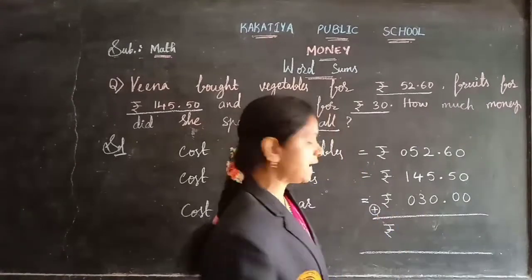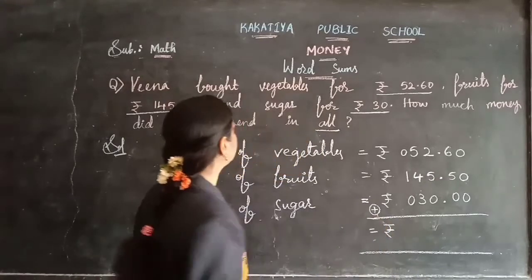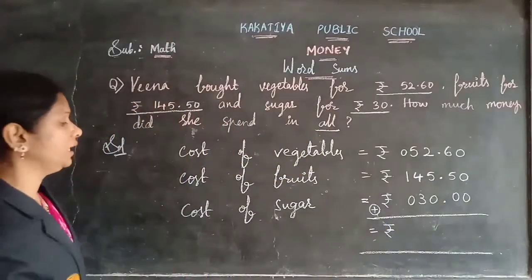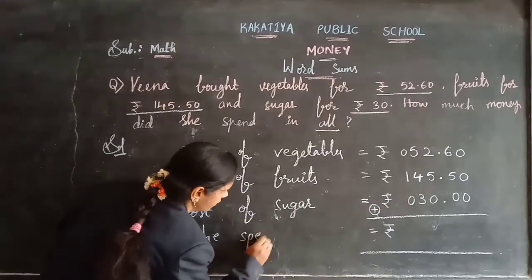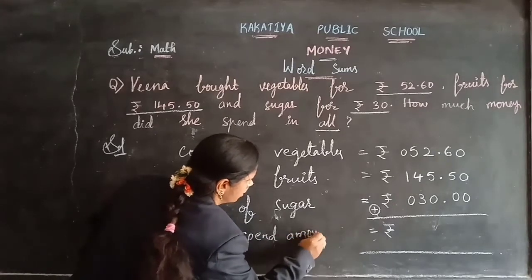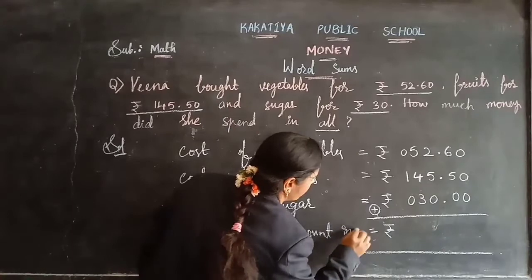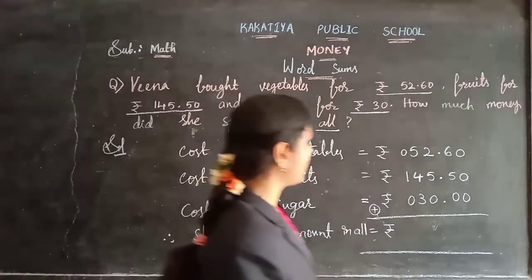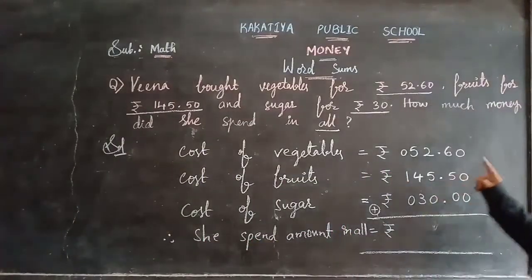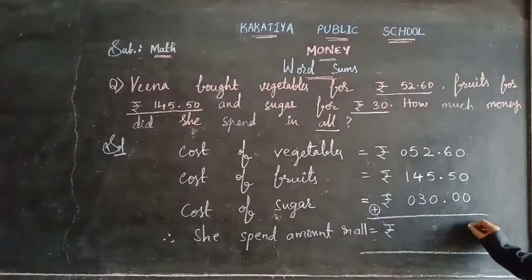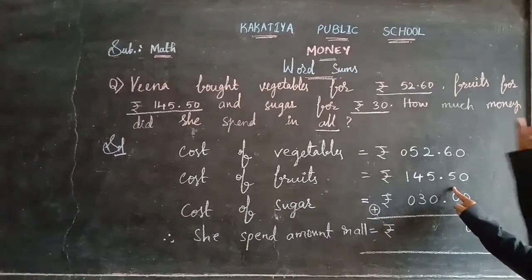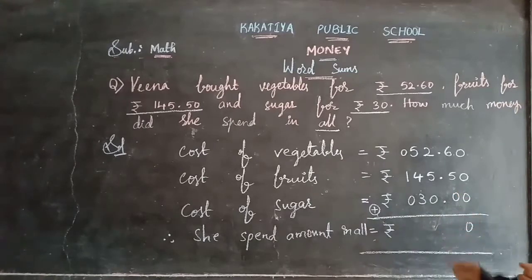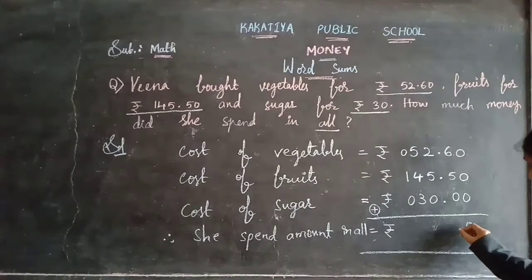Now let's do the addition. The final required step is: she spent in all — therefore she spent this total amount. Let's add: 0 plus 0 plus 0 equals 0. Now 6 plus 5 plus 0 — counting from 6 onward 5 steps gives us 11. So 11 is a two-digit number; write 1 here and carry 1.